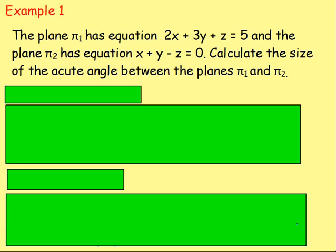Example one. The plane π₁ has equation 2x + 3y + z = 5, and plane π₂ has equation x + y - z = 0. Calculate the size of the acute angle between π₁ and π₂. So we've got this equation of the plane, π₁.